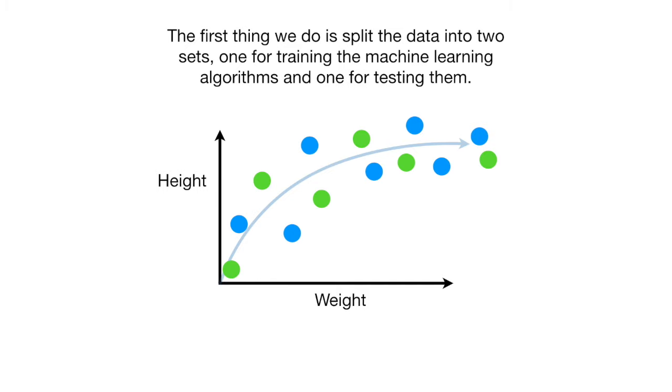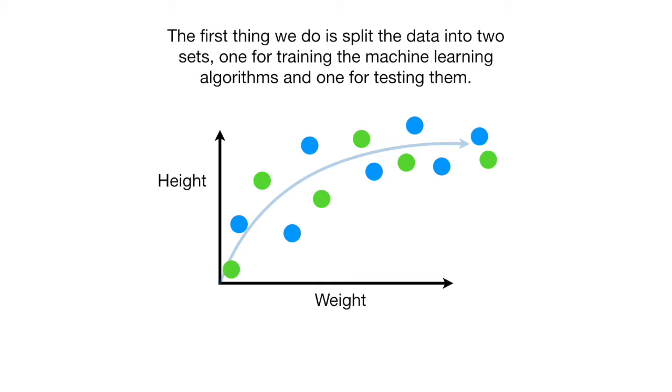The first thing we do is split the data into two sets, one for training the machine learning algorithms and one for testing them. The blue dots are the training set, and the green dots are the testing set. Here's just the training set.